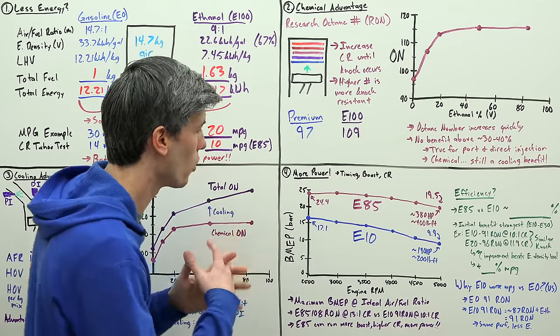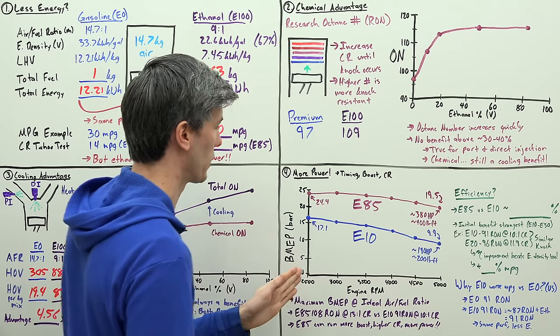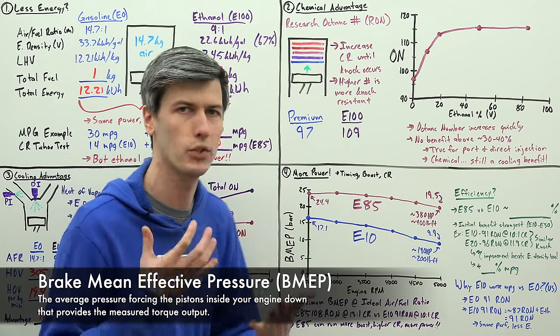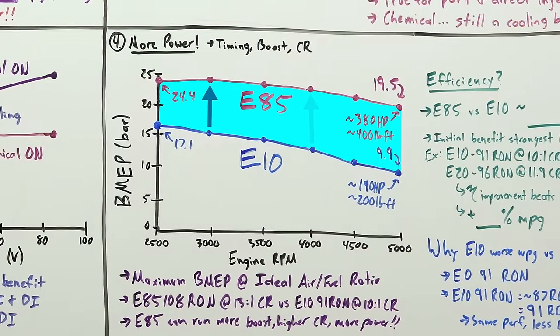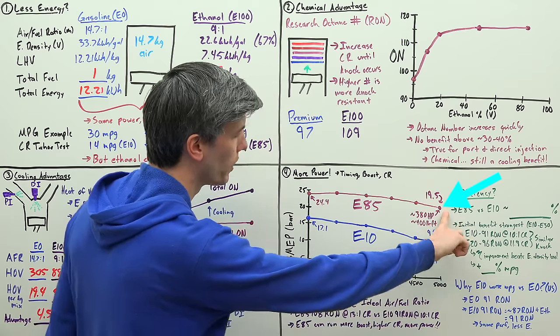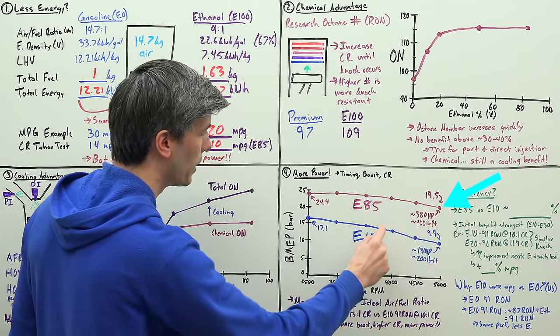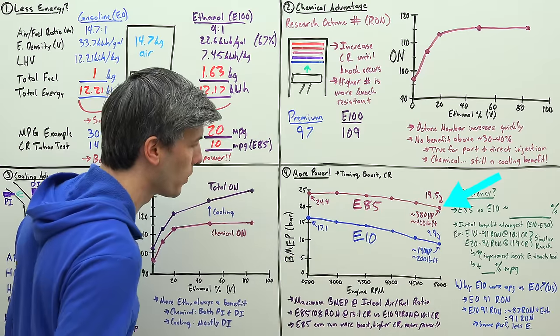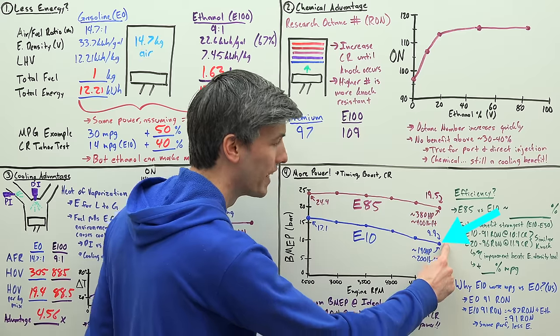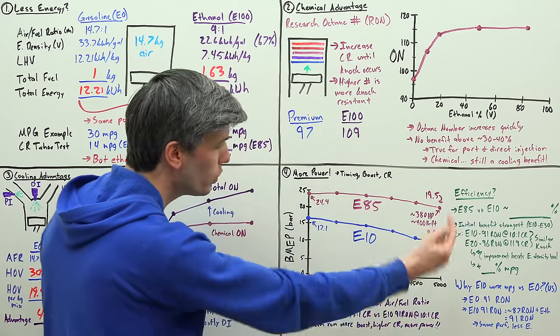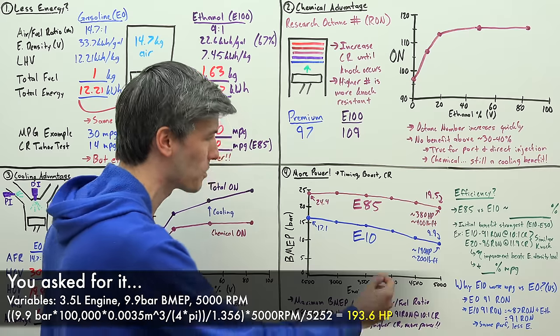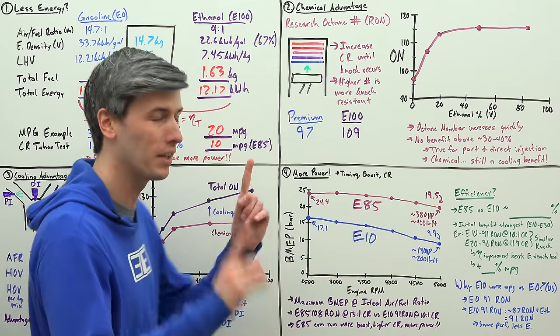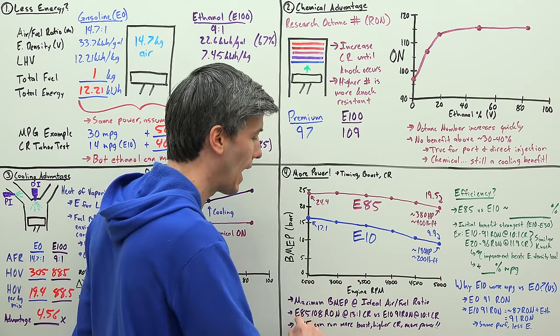And then they essentially cranked up the boost with each of these different fuels until they ran into knock, until they ran into engine problems. So what we're looking at here, on the bottom we have engine RPM, on the left we have brake mean effective pressure. If you're unfamiliar with brake mean effective pressure, you can think of it as torque per liter. And I'll do some helpful translating a little later on to help explain this. But here we can see the curves of these two fuels. And as you can see, E85 has a much greater torque per liter, brake mean effective pressure, than E10. So if we look at this point right here, we have 5,000 RPM, and at 5,000 RPM the maximum brake mean effective pressure we can achieve is 19.5 bar versus on E10 at 5,000 RPM it's just 9.9 bar, meaning nearly half. So if you do the math, this is making about 380 horsepower running E85, whereas here we're only making about 190 horsepower. Double the power simply by using a different fuel.